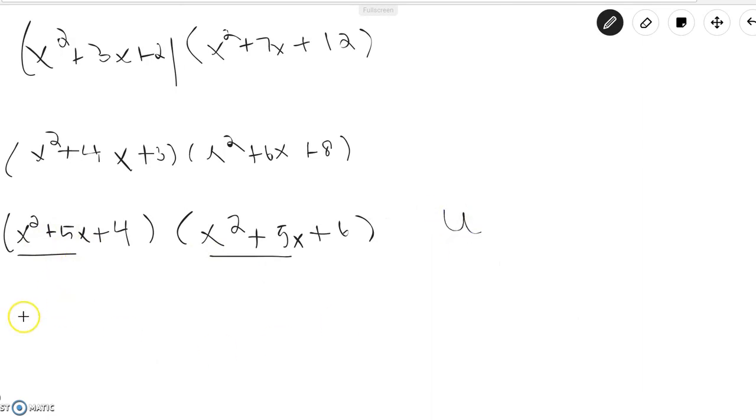Now we have the expression (u+4)(u+6) where u equals x²+5x, and the minimum of this expression occurs when u equals negative 5, and this equals negative 1.